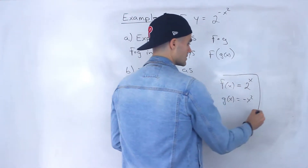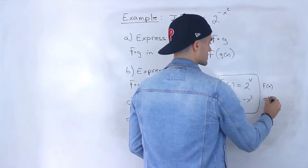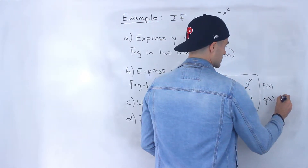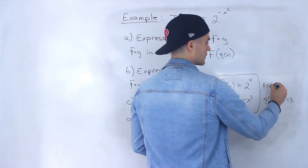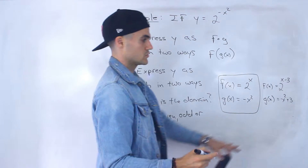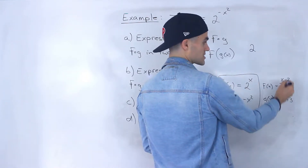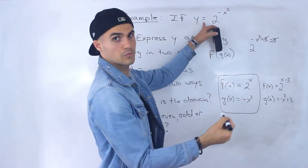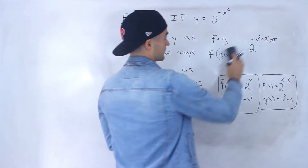Another way to do this: we can let g of x be negative x squared plus 3. So we would end up with f of x being 2 to the power of x minus 3, which would take that plus 3 away. Because f of g of x in this case, we'd have 2 to the power — we would plug in this whole expression for x, negative x squared plus 3, and then we'd be subtracting 3. Those would cancel out, and we would be left with 2 to the power of negative x squared. So that is another way.